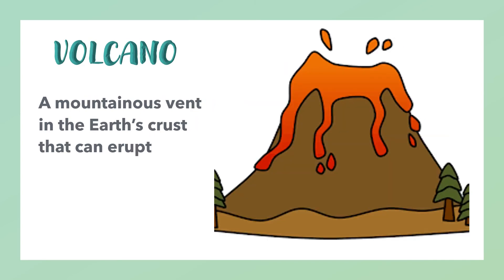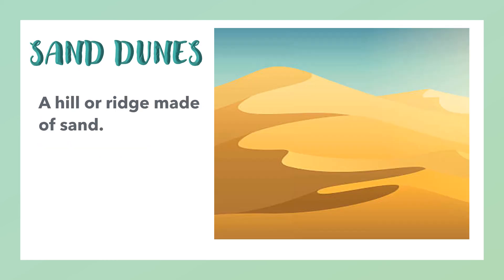Volcano: a mountainous vent in the earth's crust that can erupt. Sand dunes: a hill or ridge made of sand.